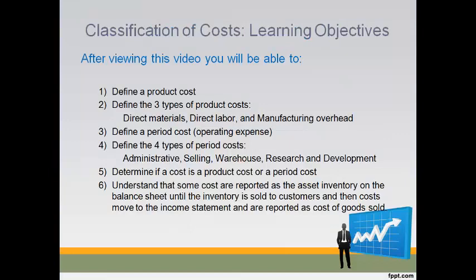After viewing this video, you will be able to define the three types of product cost, define the four types of period cost, determine if a cost is a product cost or a period cost, and understand that some costs are reported as the asset inventory on the balance sheet until the inventory is sold to customers, and then these costs are moved to the income statement and reported as cost of goods sold.